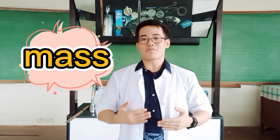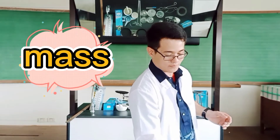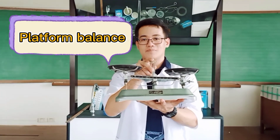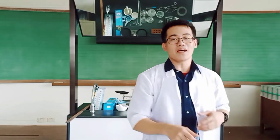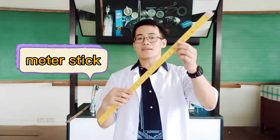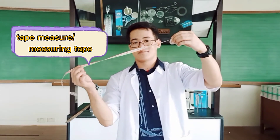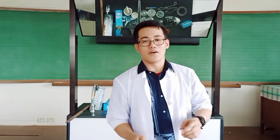To measure the mass of an object, we can use the platform balance. To measure the length, we can use the meter stick, the measuring peak, and the ruler.